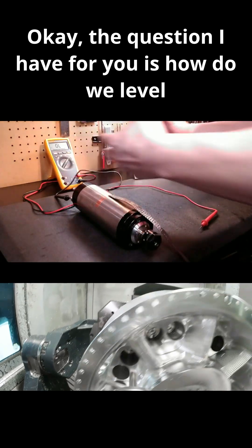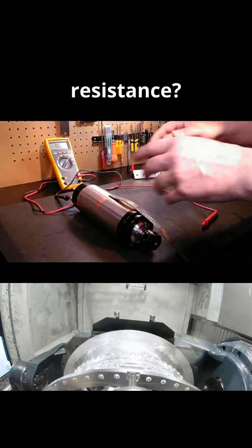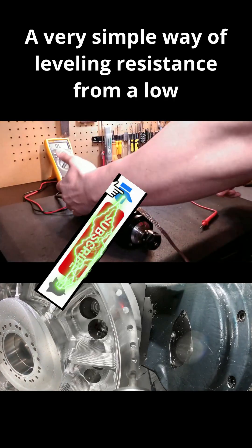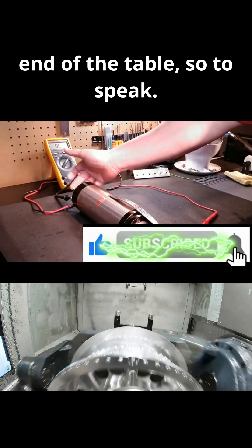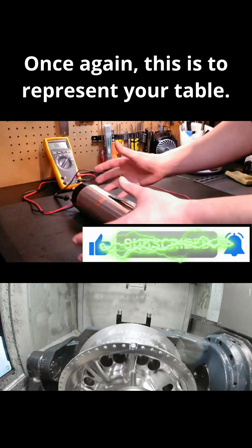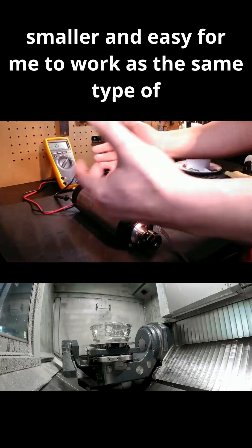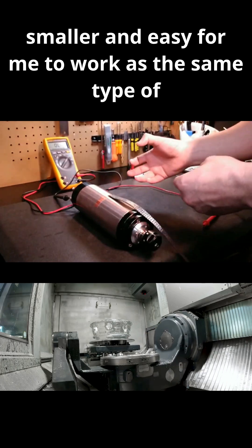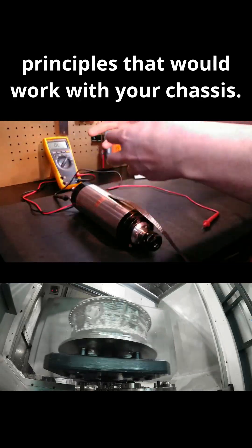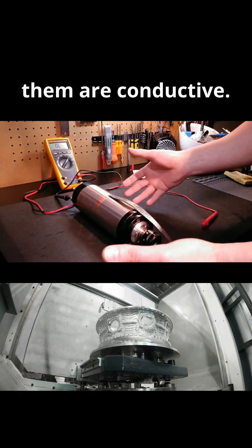Okay, the question I have for you is how do we level resistance? A very simple way of leveling resistance from a low end of the table—so to speak, once again this is to represent your table. And again, the reason I'm doing this is it's much smaller and easier for me to work with. It's the same type of principles that would work with your chassis. There's a bunch of parts bolted on and most of them are conductive.